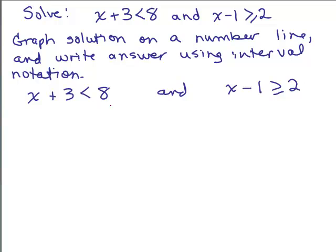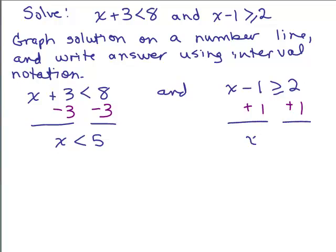So we take x plus 3 is less than 8. How are we going to solve that? We'll subtract 3 from both sides, so that gives us x is less than 5. We have solved that inequality. Now let's solve the other one: we're going to add 1 to both sides, so we have x is greater than or equal to 3.